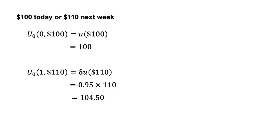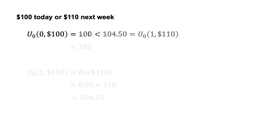In this case, a discount of delta equals 0.95 is applied to the $110 as it is received in one week. We can now compare: u₀(0, $100) equals 100, which is less than 104.5, which equals u₀(1, $110). Allison would prefer to receive $110 next week as it leads to higher discounted utility.